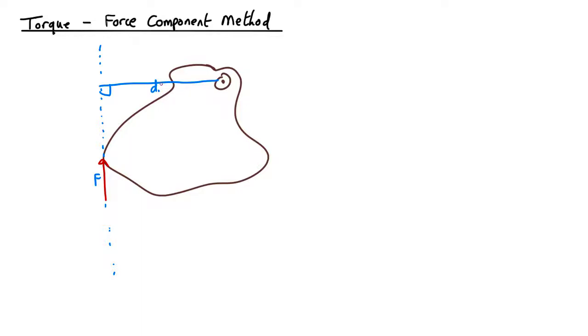But there's another way to do it. What you can do is you can draw a line from the hinge to the place where the force is actually being applied. And then break the force up into two components: a component towards the middle, and a component at right angles towards the middle.